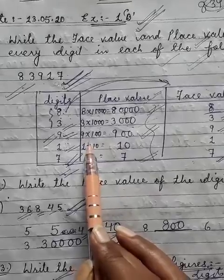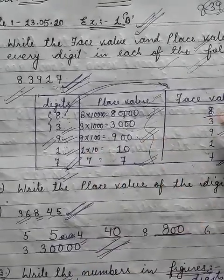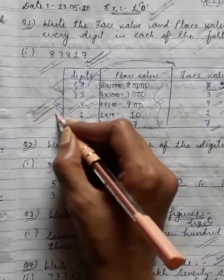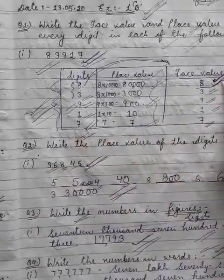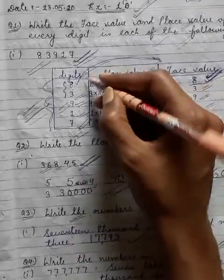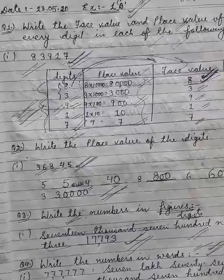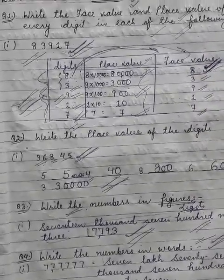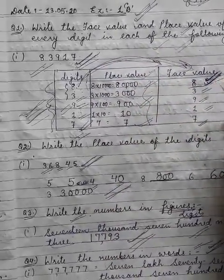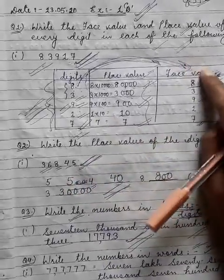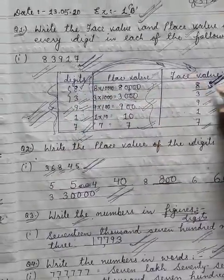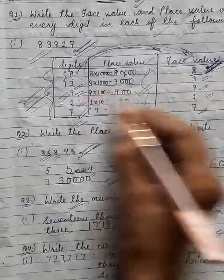Similarly, we write down nine with the multiplication sign and hundred — 9 × 100. Follow the same step to get the place value of any given digit. Now moving to face value: face value of any digit in any number is the digit itself — same wahi digit ho jata hai — because face value find karne ke liye places nahi dikhte. We just write the digit as it is. So the face value of eight is eight, three is three, nine is nine, one is one.